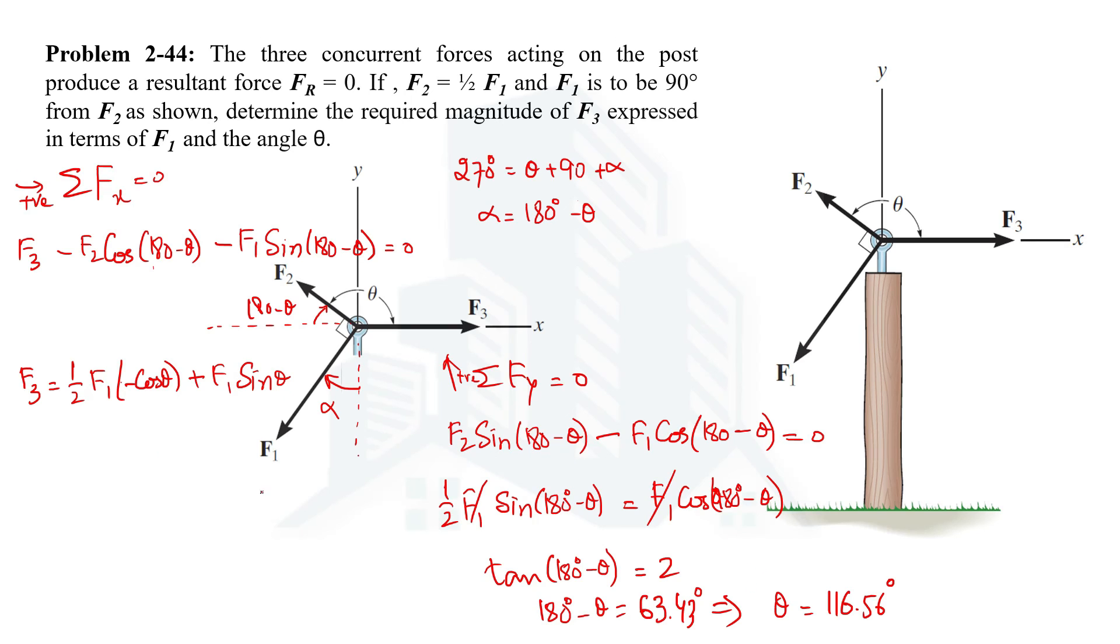Once you have got theta, then just simply put it over here. So F3 equals half, this is negative, F1 cos(116.56), similarly F1 sin(116.56). So when you do some basics, you will calculate cos(116.56) and sin(116.56), you're going to get 1.12 times F1.